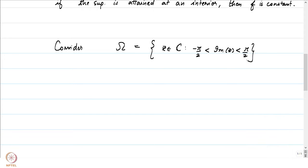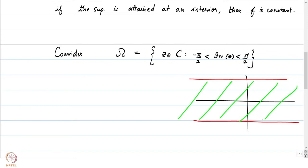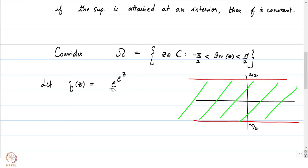Consider omega to be the horizontal strip: the set of all z in C such that -π/2 < Im(z) < π/2. If I draw it on the complex plane, using red lines to capture +π/2 and -π/2, the region shaded in green is what we are considering — imaginary part between -π/2 and +π/2. In this region, consider the function f(z) = exp(exp(z)).